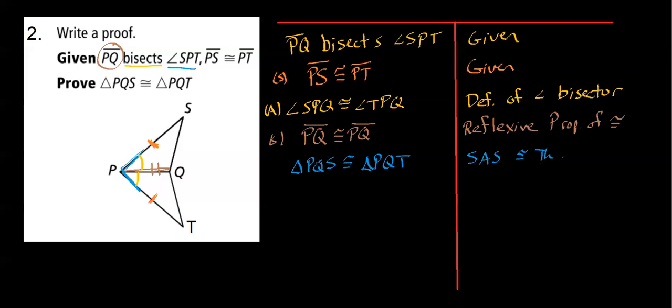And one quick note here, whenever you're writing this final step, I would just copy directly from the prove statement here. Because you just can't throw these letters in any order that you want. So that'd be an easy mistake to make. So just copy that just to make sure that all of your corresponding parts are lining up.